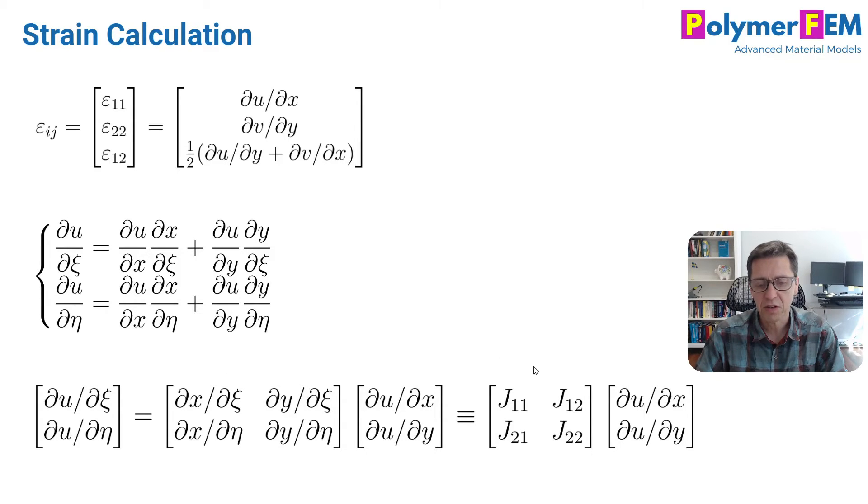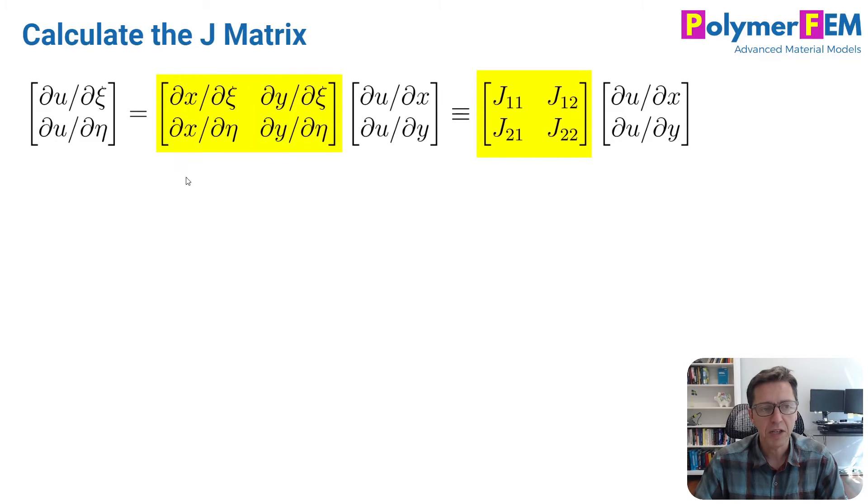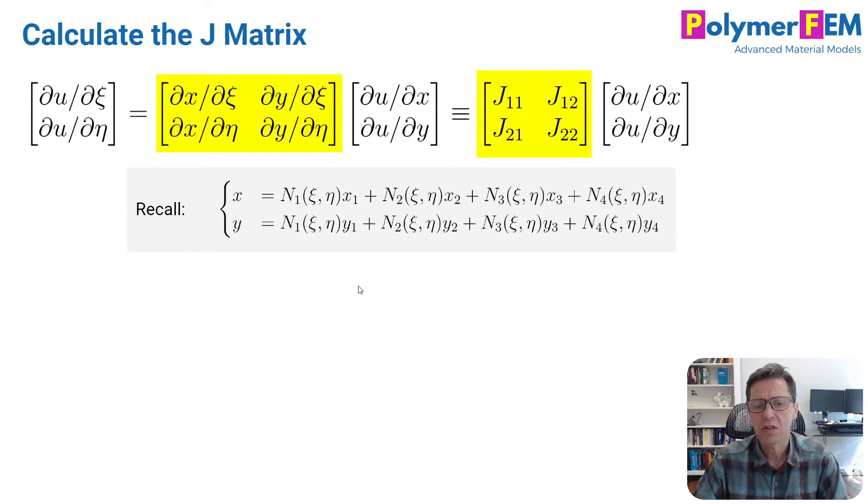So the J matrix is that particular variable that we need to be able to calculate. So let's look at that in a little bit more detail. So here's the same equation as before. The J_11, the first term here is given by the ∂x/∂psi and so forth. And to calculate this, we need to introduce a little bit more concepts here.